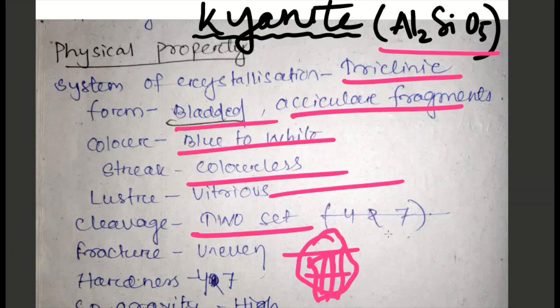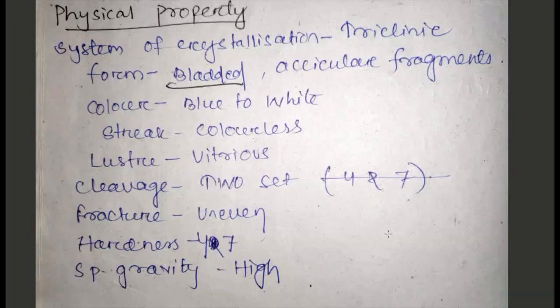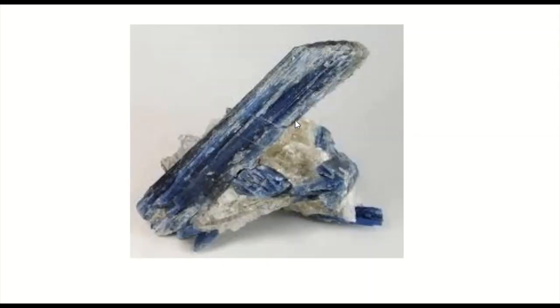This is the kyanite mineral sample and this is blue color. You can see that the cleavage is completely sharp and the mineral is completely needle-shaped. If we are doing practical, we have to be very careful to test this mineral. Because if we test along the cleavage, we will do it easily and the hardness along the cleavage is 4, but if we try across the cleavage, the hardness is 7.